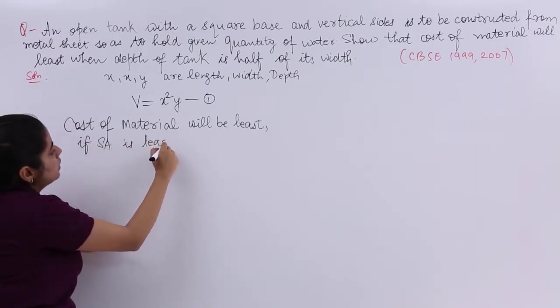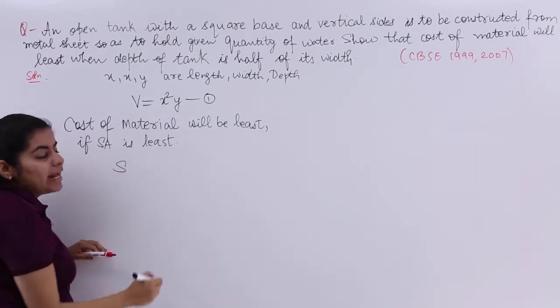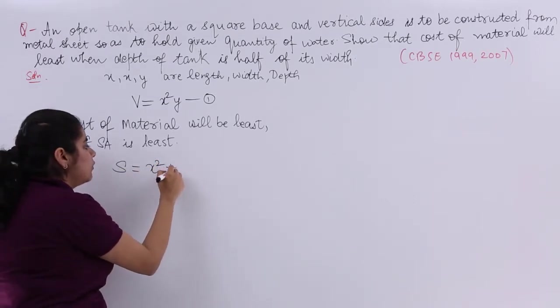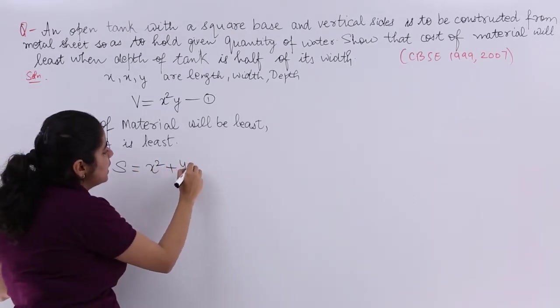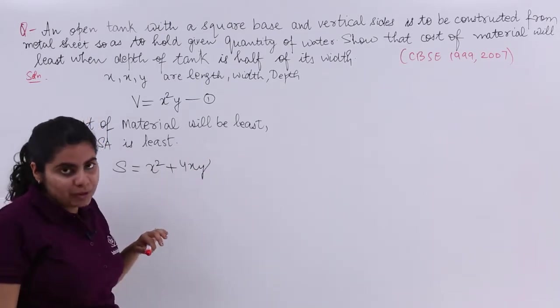So cost of material will be least if surface area is least. SA or S I am writing. So what is S or SA or surface area? It is nothing but surface area of the base plus that of the four sides, because you are not going to take the top into consideration.